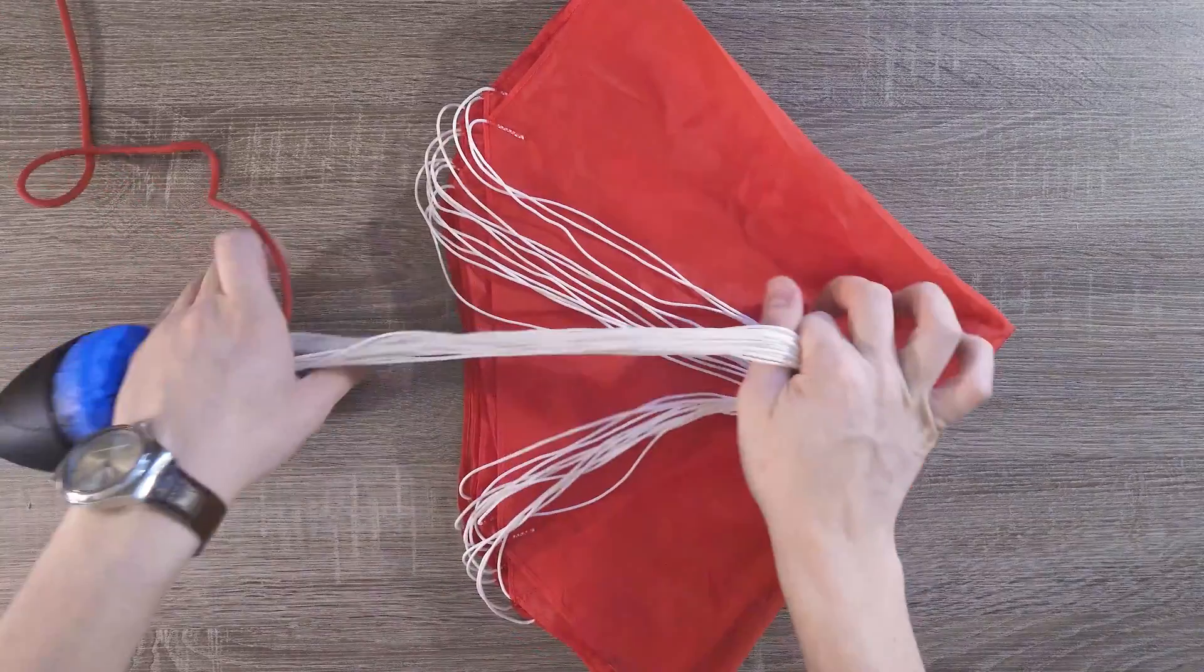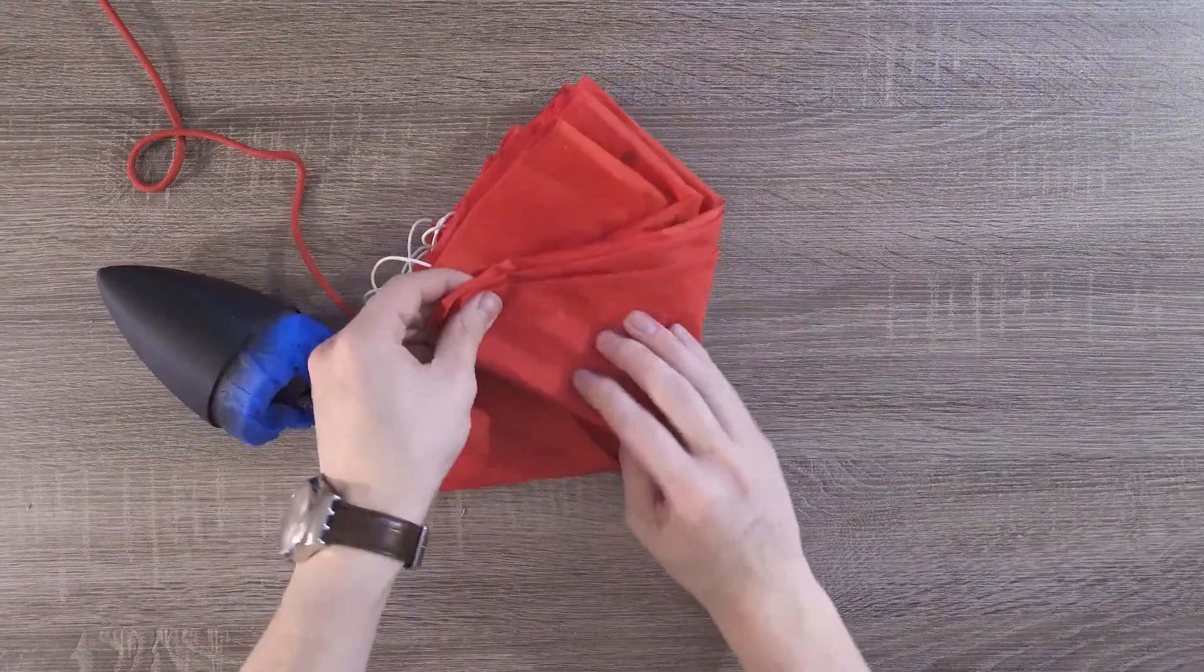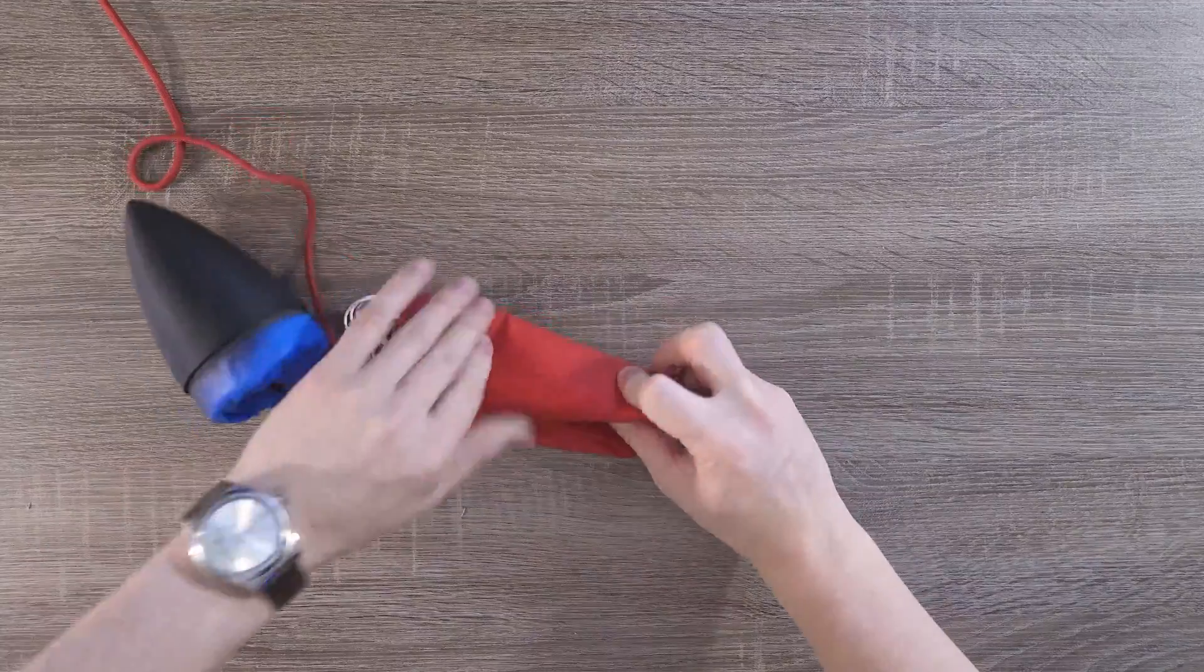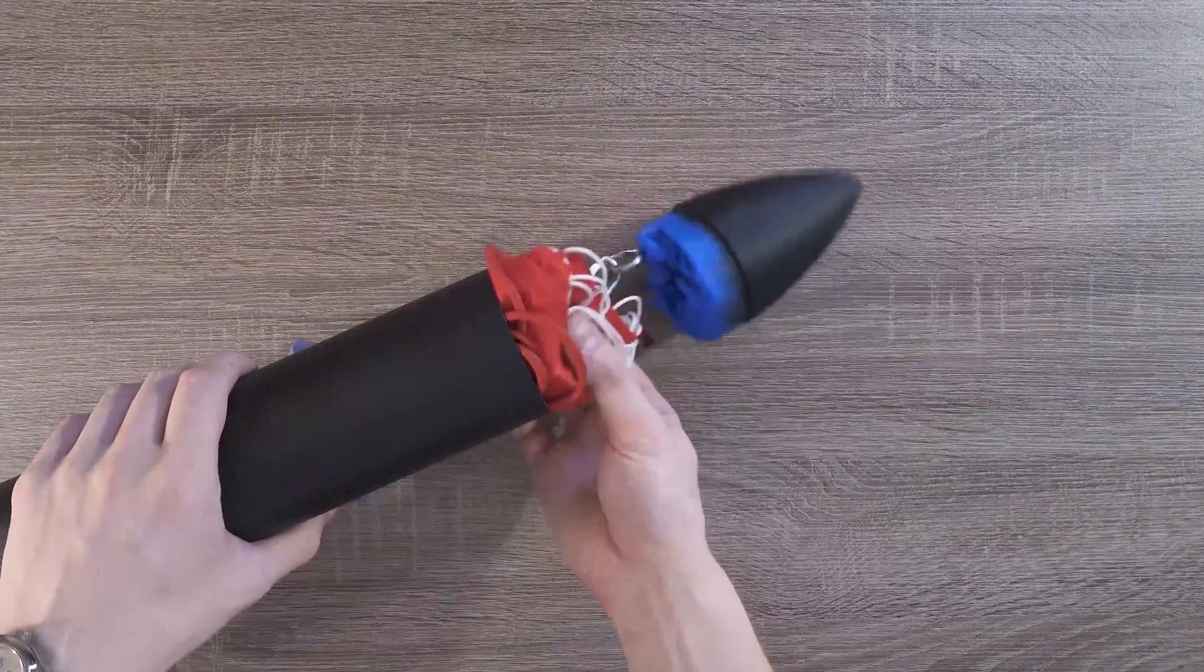There are lots of ways to pack your parachute, but I like to put the lines inside the chute and fold it over itself a few times. Then we'll bunch up some of the shock cord with it and slide it into the airframe.